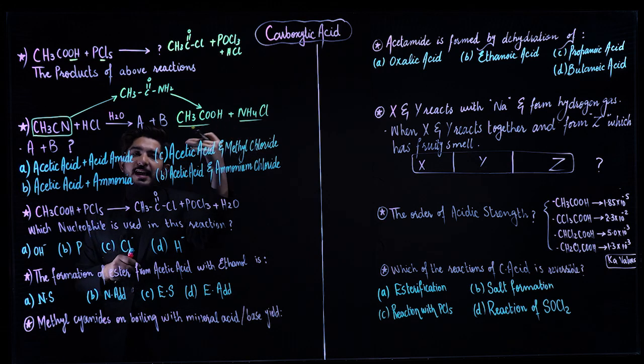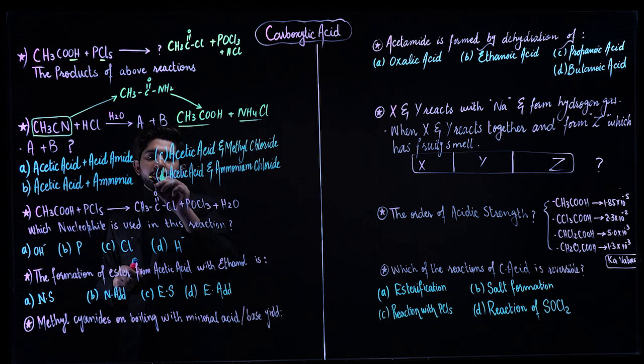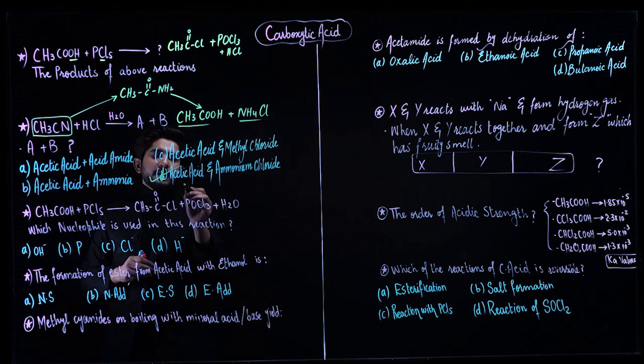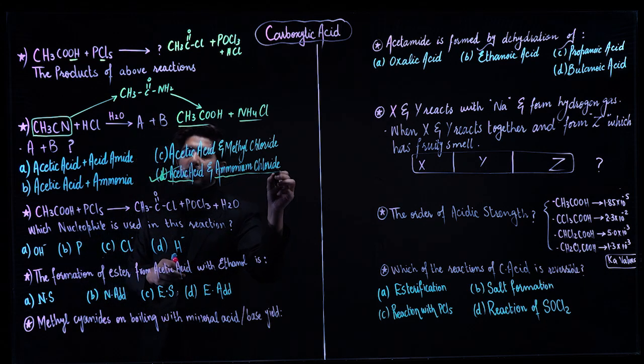So A and B, the products are ethanoic acid, also known as acetic acid, and ammonium chloride. We have to select this option: acetic acid and ammonium chloride.